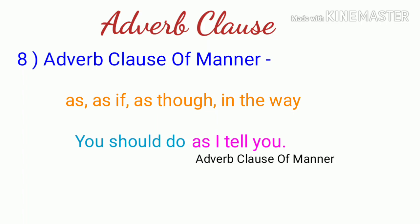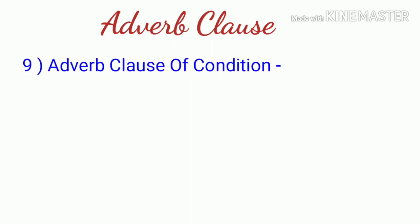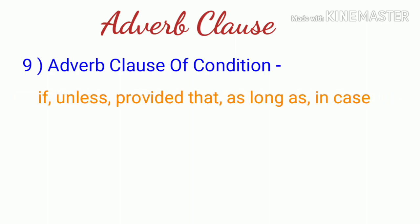The next type is adverb clause of condition - it shows the condition under which the action in the main clause takes place. These clauses begin with subordinating conjunctions such as 'if,' 'unless,' 'provided that,' 'as long as,' 'in case.'